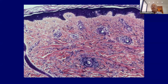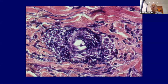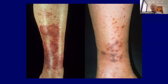If you do a PTAH stain — phosphotungstic acid hematoxylin — it can highlight fibrin. So even in an early lesion, there's some subclinical fibrin you can't see with H&E that you can pick up with the stain. We don't do that very frequently, but it has been reported in the literature as a way to improve the diagnosis.